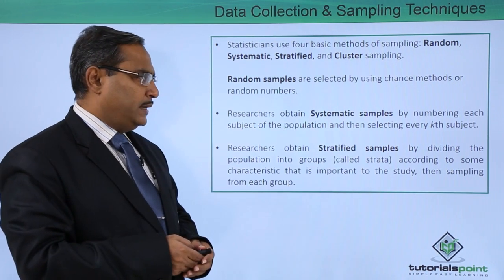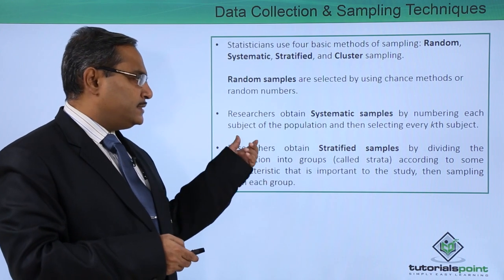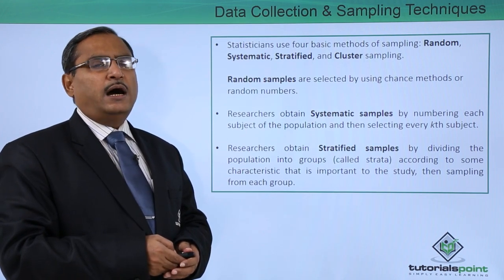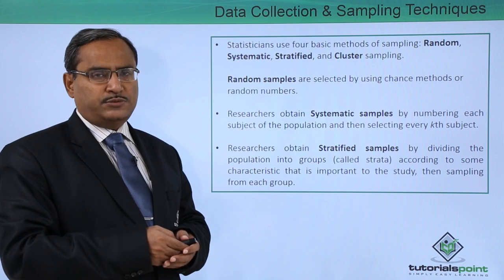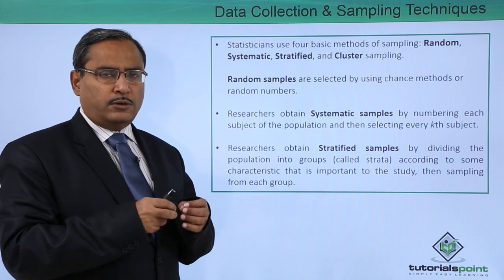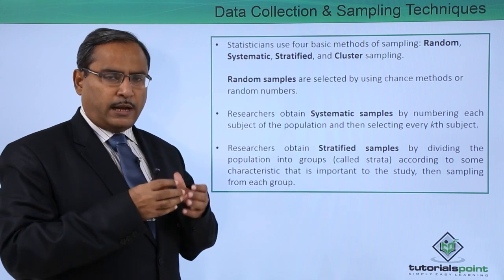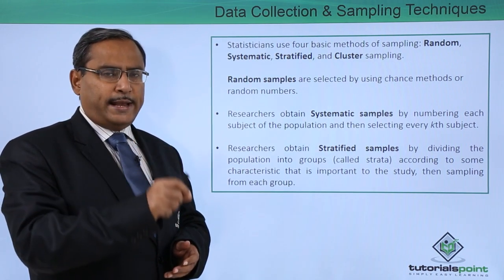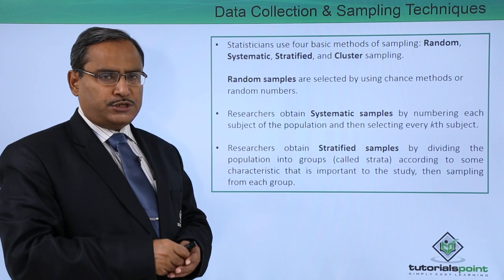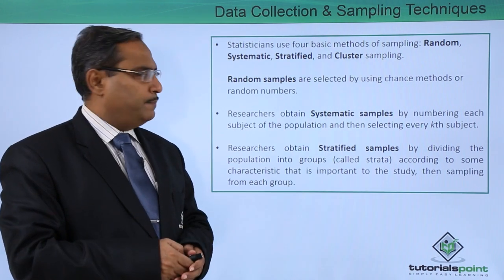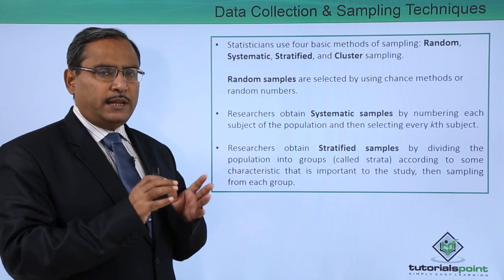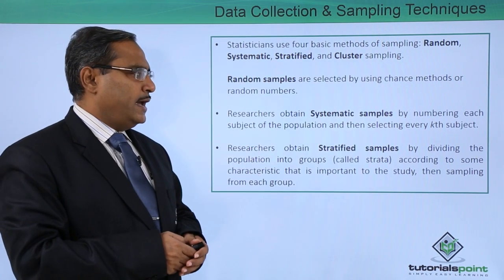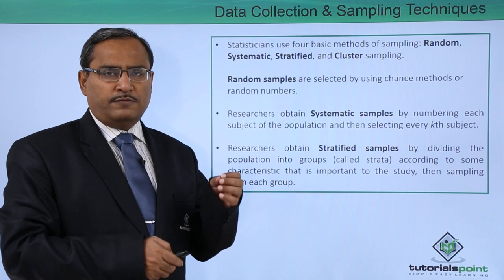Next, a researcher obtains systematic samples by numbering each subject of the population and then selecting every kth subject. For example, suppose we have 100 subjects and we are trying to pick a sample of size 20. In that case, 100 divided by 20 is 5, so we pick every 5th subject from the population. These figures are only used as an example for explanation.